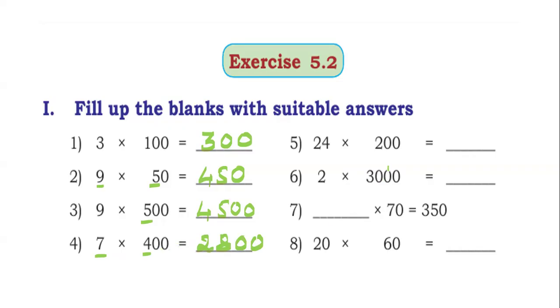24 into 200. First multiply 24 into 2. This is 48. Right hand side 2 zeros: 4,800 is the answer.